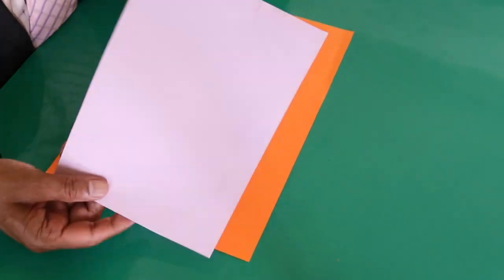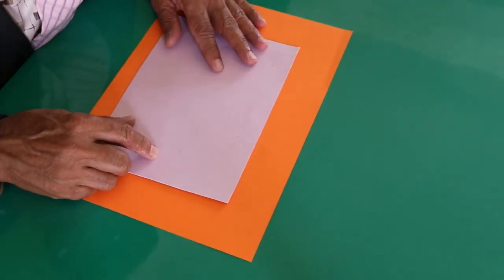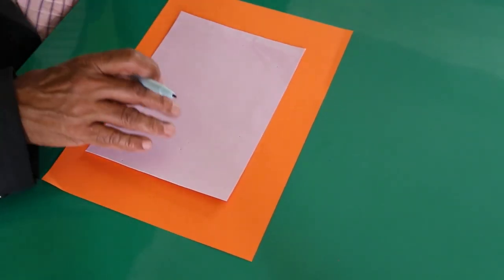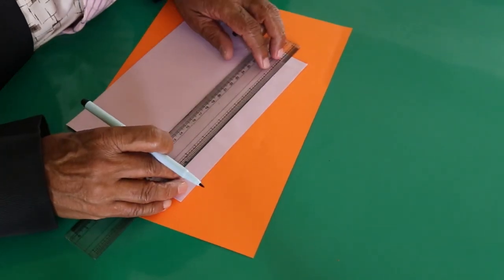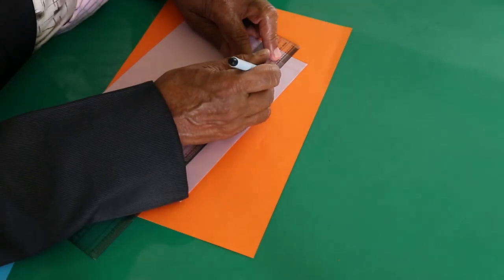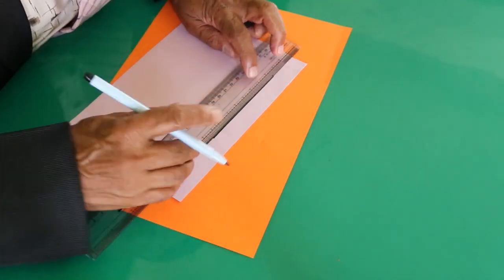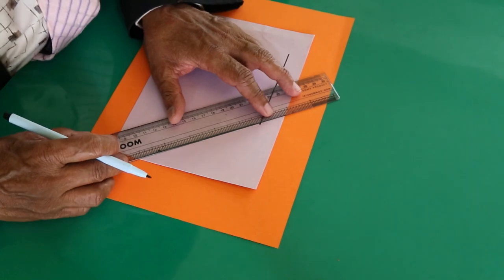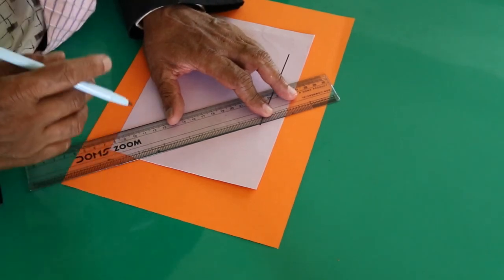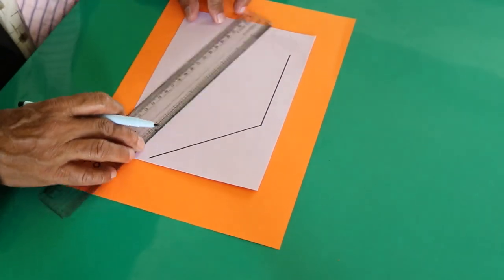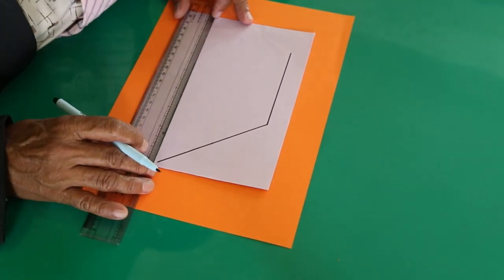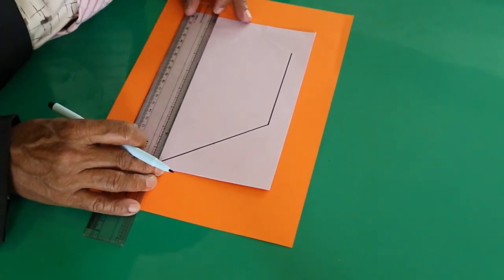My dear friend, take a sheet of paper like this. In this paper, draw a trapezium by the method of construction. Draw it accurately. It can have any size and may be isosceles or have one right angle. You can draw a trapezium having one right angle in it also.